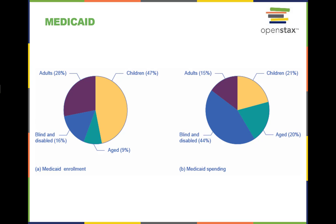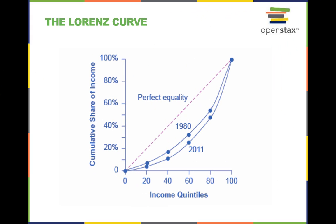Looking at the Medicaid program more closely, Part A shows Medicaid enrollment by population: young children comprise the largest percentage at 47%, followed by adults at 28%, and the blind and disabled at 16%. However, Part B shows that Medicaid spending is principally for the blind and disabled, followed by the elderly. Although children are the largest population covered by Medicaid, expenditures on children are only 21%.